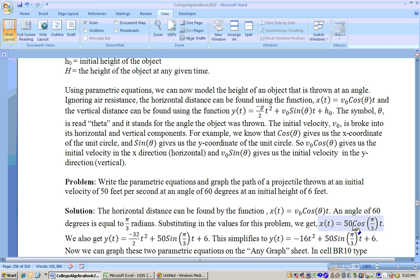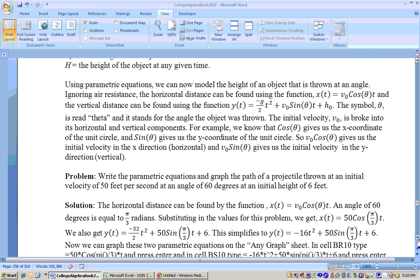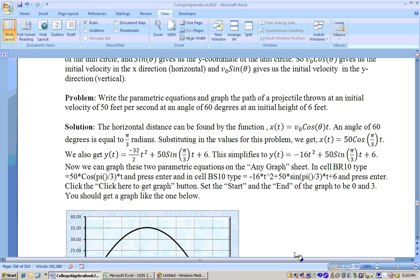We get x of t equals 50, that's your initial velocity, times the cosine of pi over 3 times t. And then the y part is negative 32 over 2, that's from your gravity, plus 50 times the sine of pi over 3, just substituting the values right in here to this part, sine of pi over 3 plus 6. Now this simplifies to negative 16t squared plus 50 sine of pi over 3 t plus 6. And now at this point we can go to the any graph sheet out to where there's parametric equations and type in the two equations.